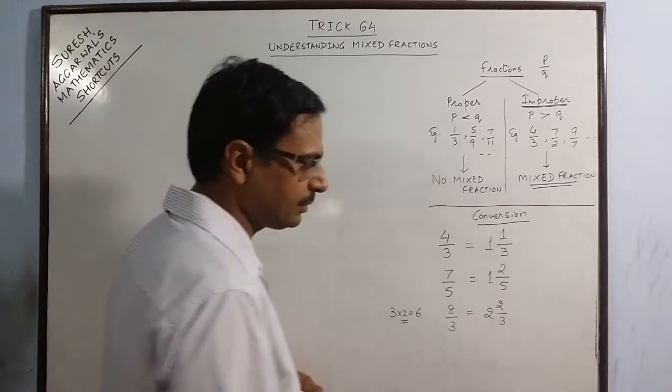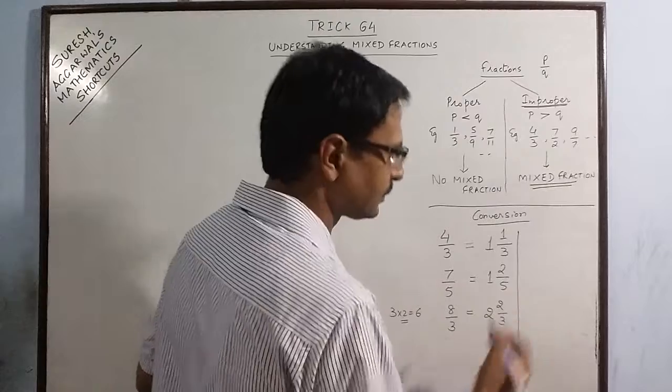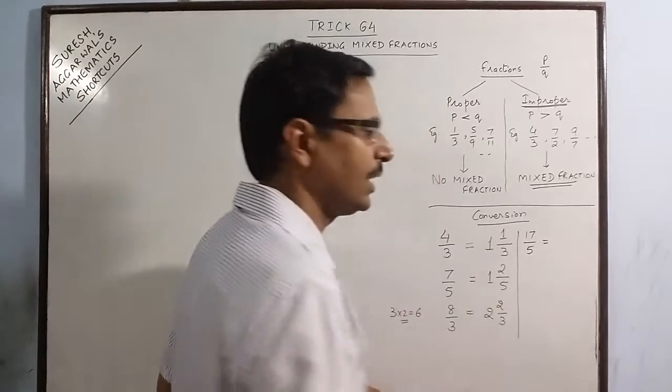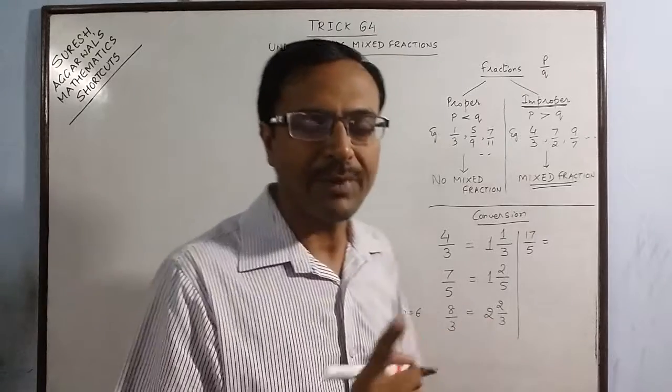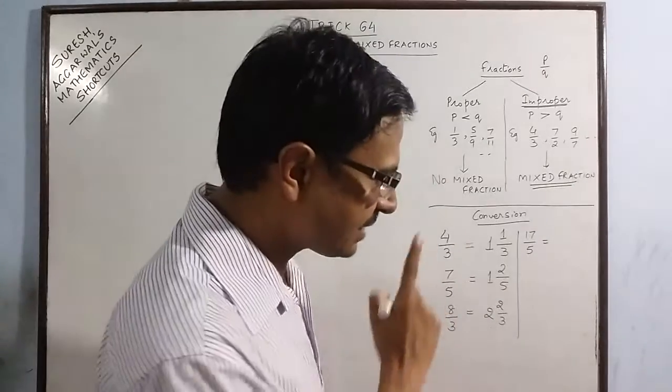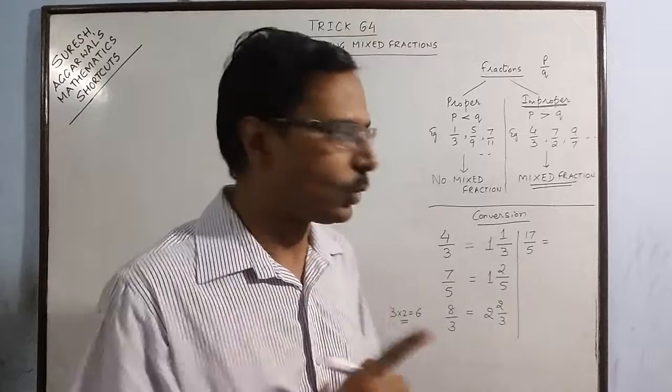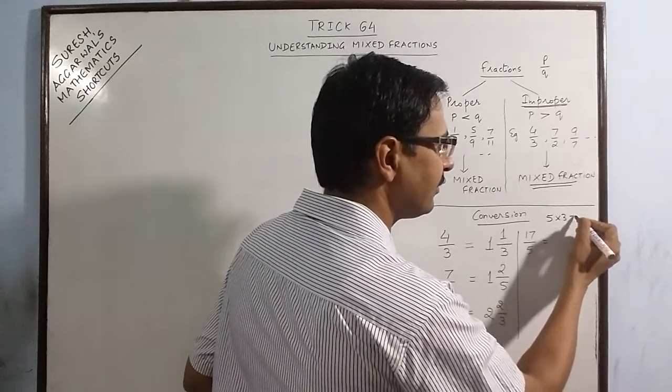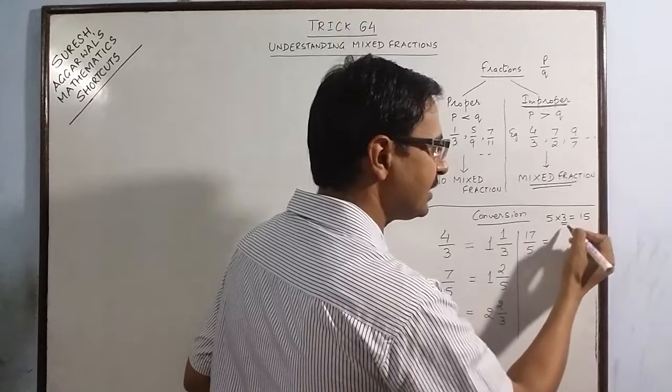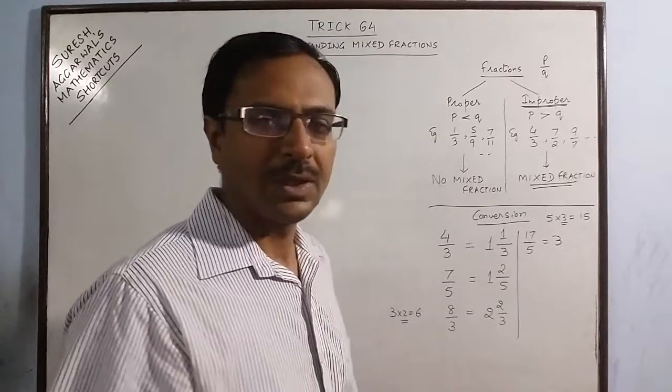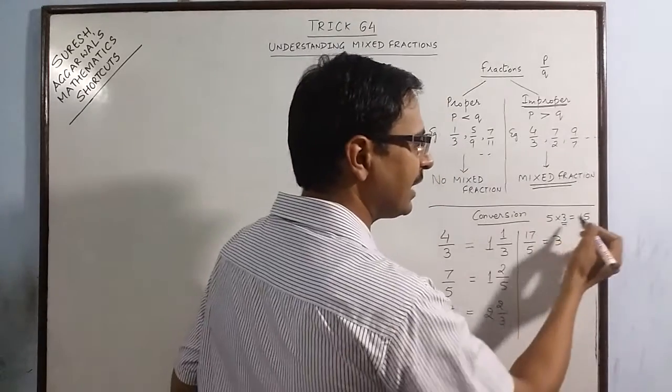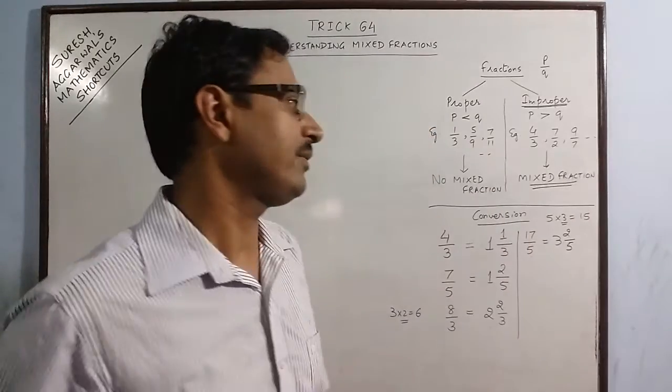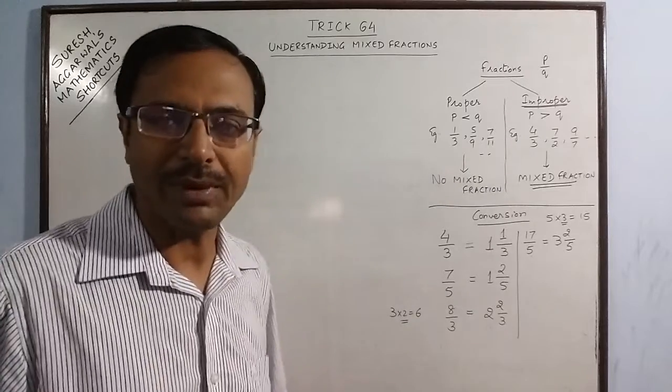One more example, say we have 17 upon 5. Count the table of 5: 5 threes are 15 is less than 17 but 5 fours are 20 is more than 17. So 5 threes are 15, we retain 3, and now 17 minus 15 is 2 and denominator remains the same. So 3 and 2 by 5 is the mixed fraction of 17 upon 5.